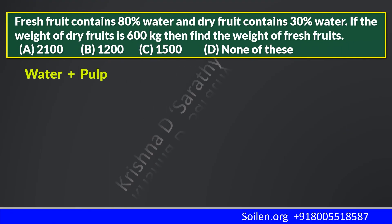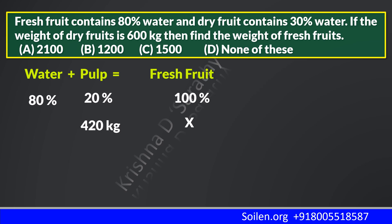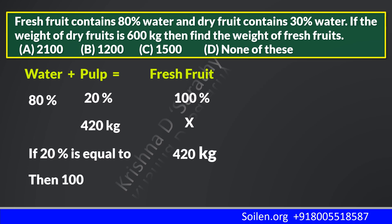In the fresh fruit, water is 80%, so the remaining 20% is pulp. As we know, the total quantity of pulp does not change. So the total quantity of pulp in fresh fruits is the same 420 kilograms. We need to find 100%, or the total quantity of fresh fruits. If 20% equals 420 kilograms, then we can find 100% easily. It gives us 2100 kilograms.